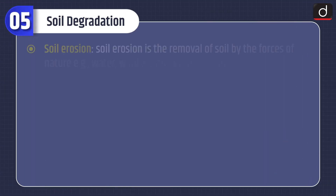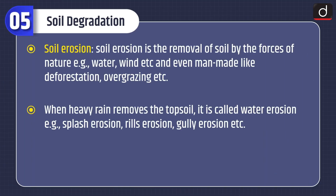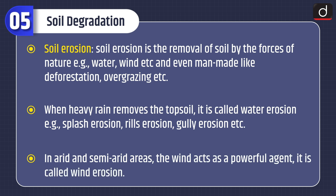Now let's discuss about soil degradation. Soil erosion is the removal of soil by the forces of nature such as water and wind, and also by man-made causes like deforestation and overgrazing. When heavy rain removes the topsoil, it is called water erosion, for example splash erosion, rill erosion, gully erosion, etc. In arid and semi-arid areas, wind acts as a powerful agent, which is called wind erosion.